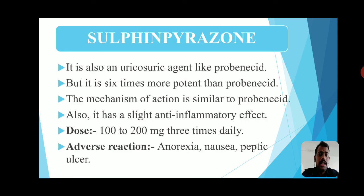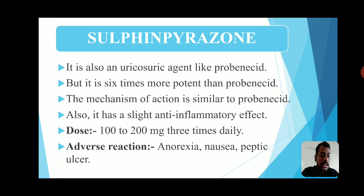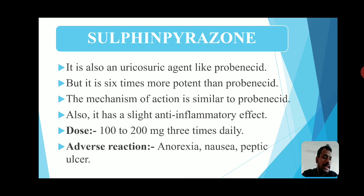Sulfinpyrazone is also a uricosuric agent like probenecid, but it is 6 times more potent than probenecid. Its mechanism of action is similar to probenecid and it also has a slight anti-inflammatory effect. The dose is 100 to 200 mg three times daily. Adverse reactions include anorexia (loss of appetite), nausea, and peptic ulcer — sores that develop on the lining of the esophagus, stomach, or small intestine.